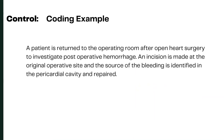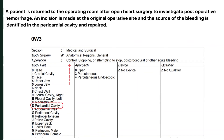Here is a more specific coding scenario: a patient is returned to the operating room after open heart surgery to investigate post-operative hemorrhage. An incision is made at the original operative site and the source of the bleeding is identified in the pericardial cavity, which is repaired. This is post-operative bleeding. Looking at the table — after heart surgery, the patient has bleeding which is still occurring and Control is being performed.